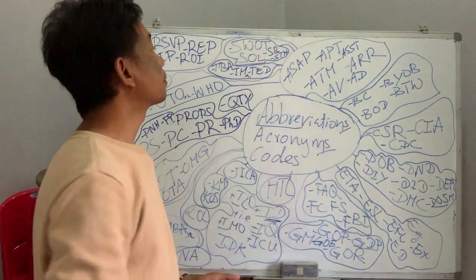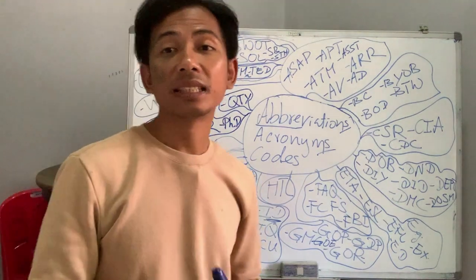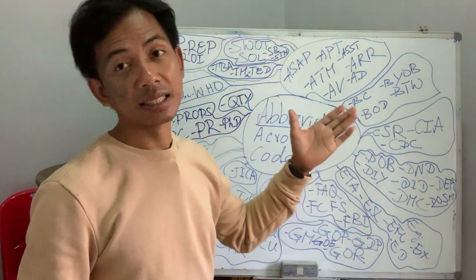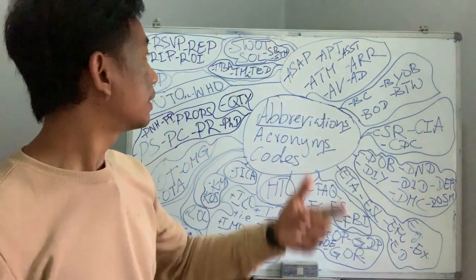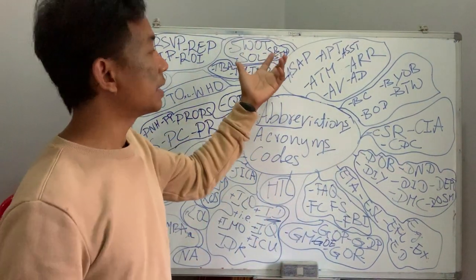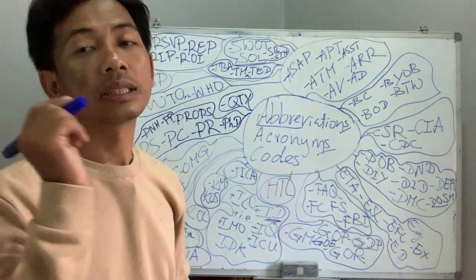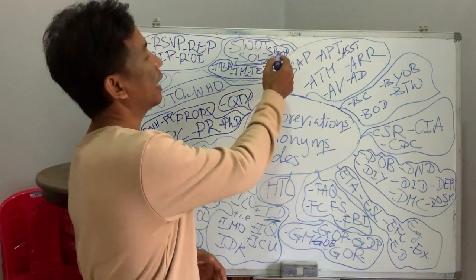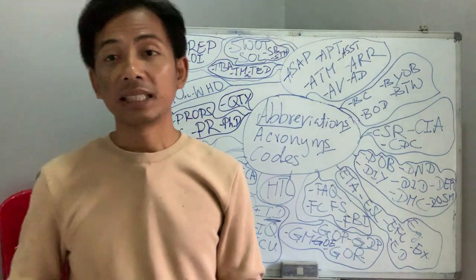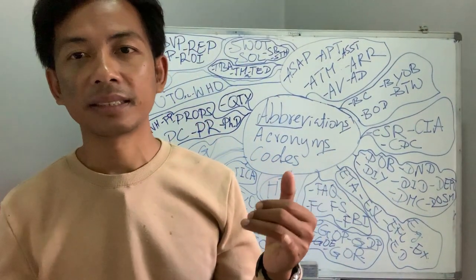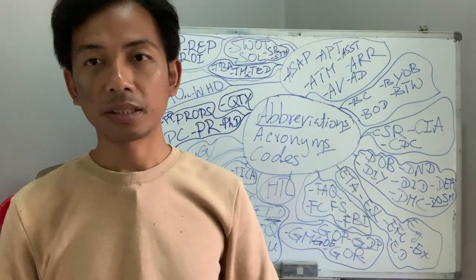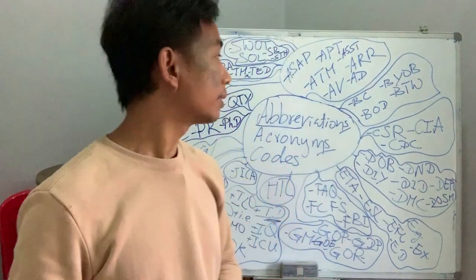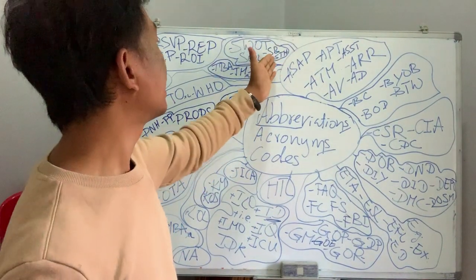SB — somebody or someone. If someone, you don't have to write 'someone' — still write SB. STH — something. In English, things and people are always a good point to note, that's why they have SB and STH.